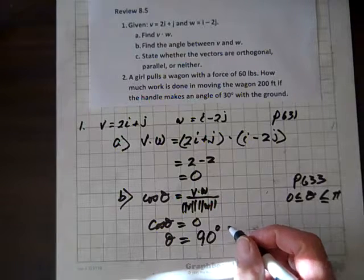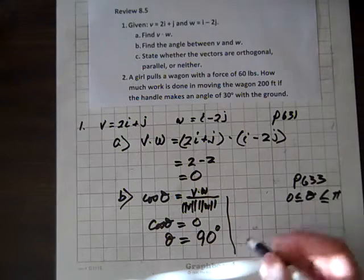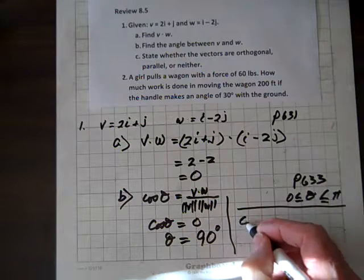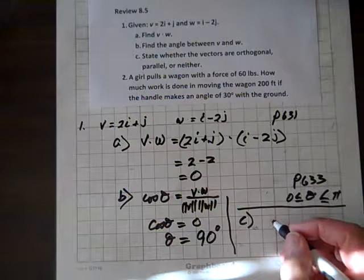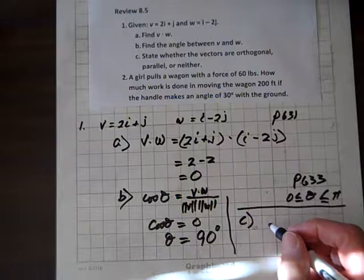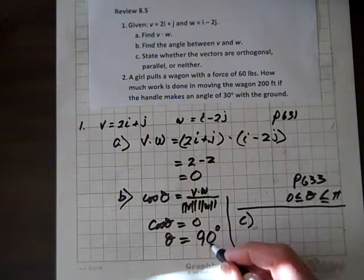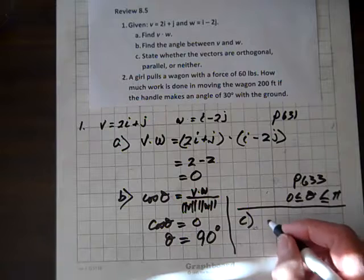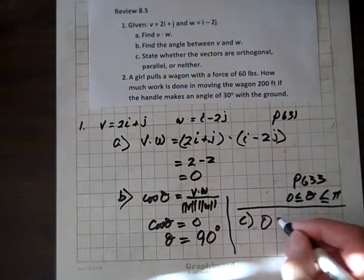Finally, state whether the vectors, so let's do part c right here. Part c, state whether the vectors are orthogonal, parallel, or neither. Well, it turns out they're orthogonal, because the angle between them is 90 degrees.